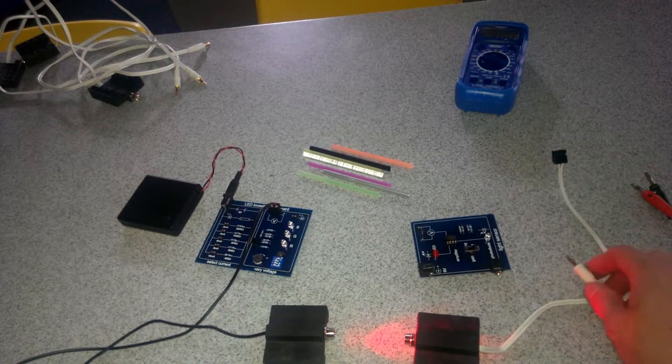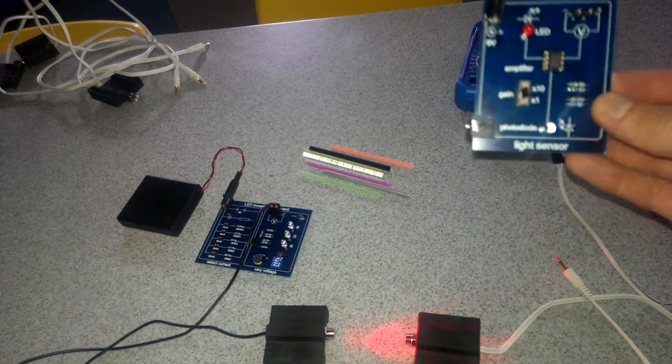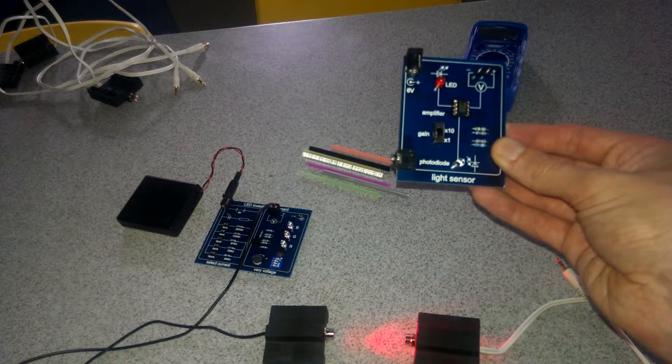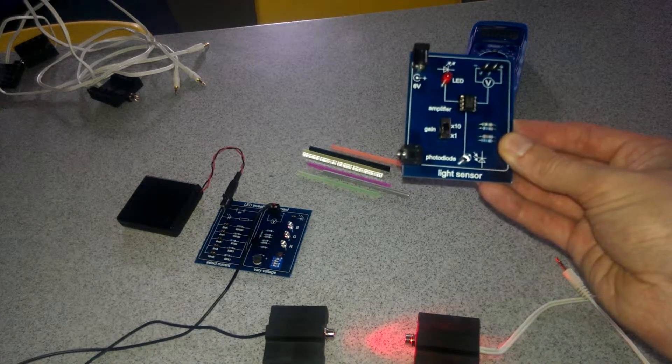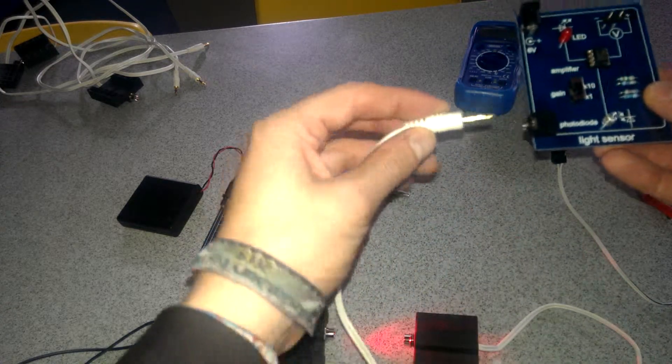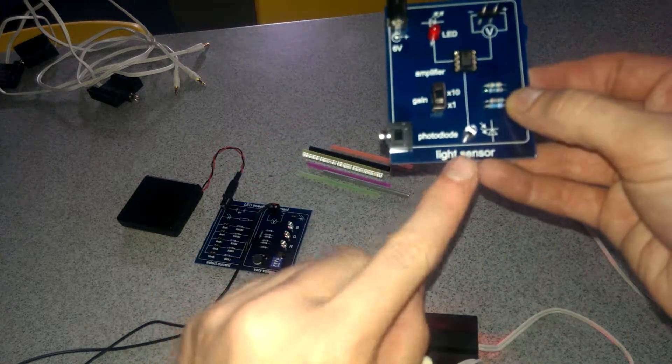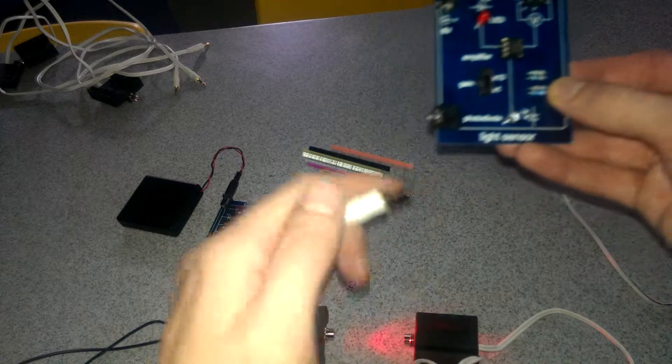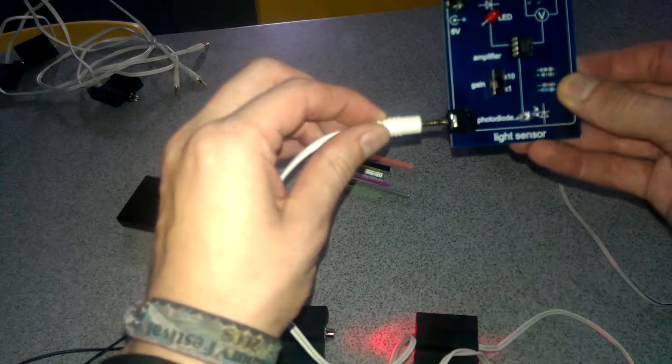You need to attach this to the other little circuit board you have. Now this is a light sensor, it contains two light sensors in fact, but one of which you are going to plug in here. So where it says photo diode on the bottom left you plug in the headphone jack into that socket.